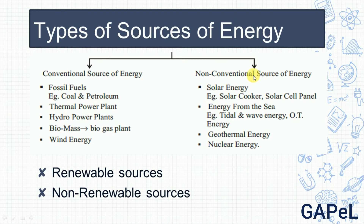The second category is non-conventional sources, also called renewable sources. As the name suggests, renewable sources can be renewed — we can use them again and again. The best example is solar energy. The sun is a huge source of energy, and solar energy will not run out. So solar energy is a renewable source.